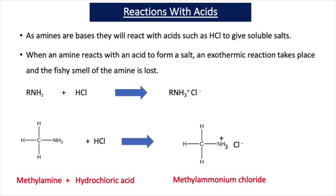As an example, methylamine, CH3-NH2, plus hydrochloric acid, HCl, forms the salt methylammonium chloride, CH3-NH3+ Cl-. There is an ionic bond between the methylammonium ion and the chloride ion. In this reaction the amine has accepted H+ from the acid, and it is able to form a dative or coordinate bond with the H+ because of its lone pair of electrons on the nitrogen.